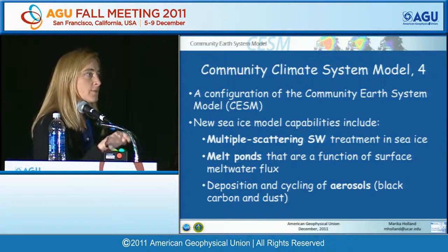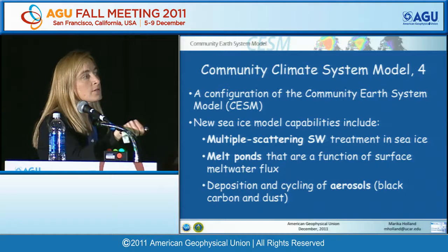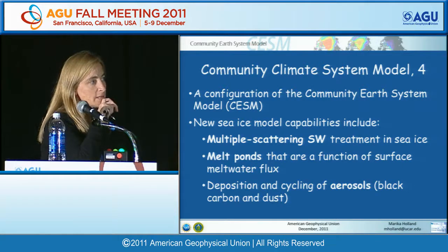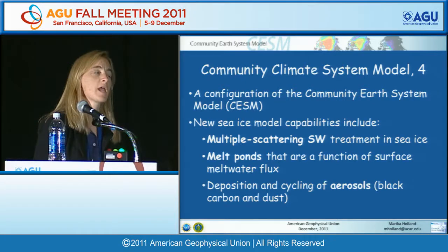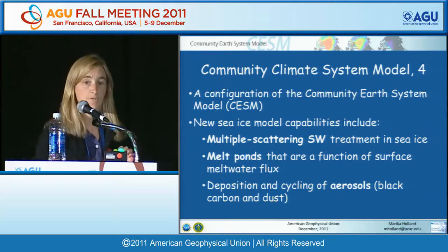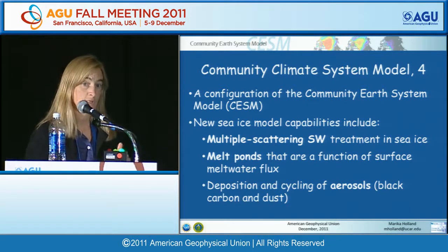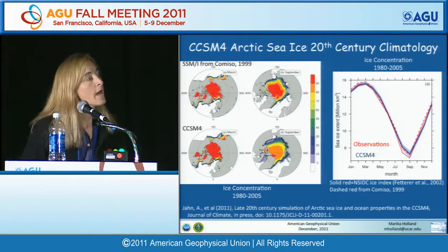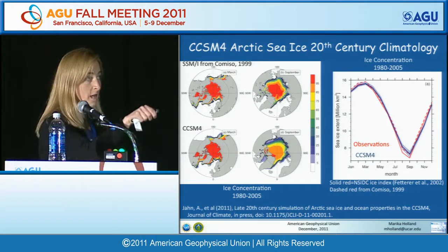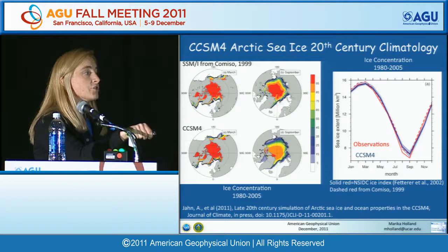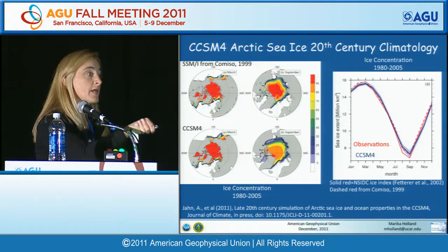I'm showing model simulations from the Community Climate System Model version 4, CCSM4. This configuration is particularly useful for looking at surface albedo changes because the sea ice model has new capabilities including multiple scattering shortwave radiative transfer, a melt pond parameterization where ponds are a function of surface meltwater flux, and deposition and cycling of aerosols — giving a much more realistic treatment of surface albedo. The model simulates a very good late 20th century sea ice climatology, with good simulation of the ice edge and annual cycle.